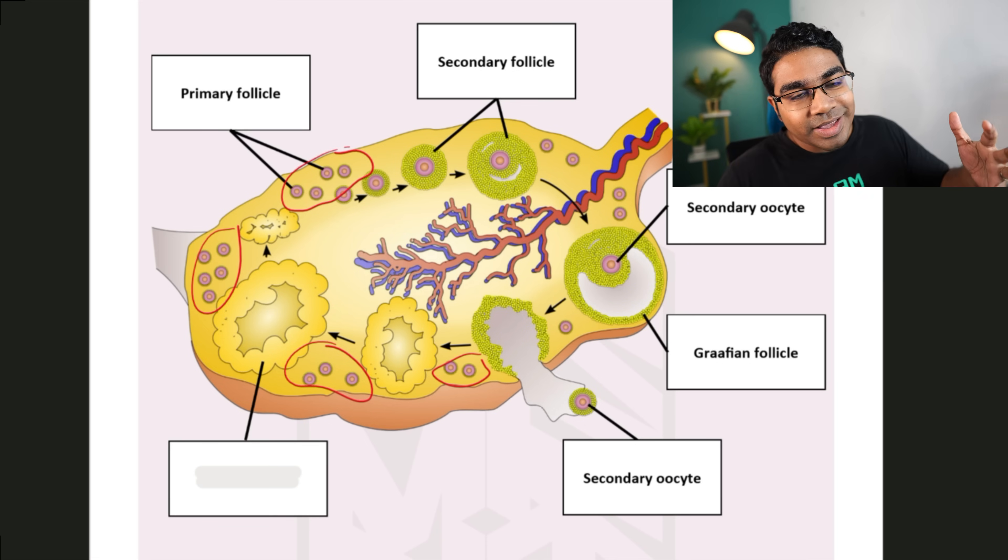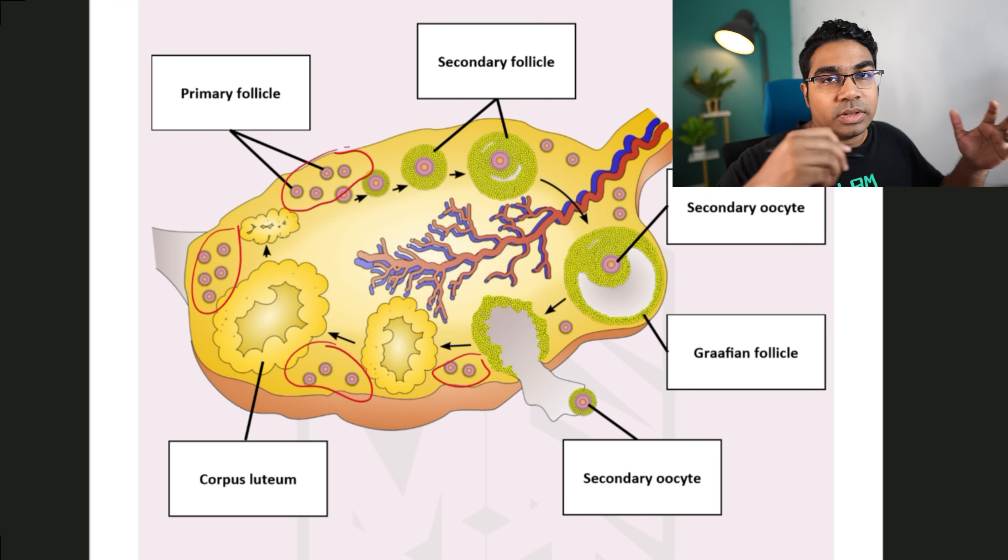This graafian follicle is then going to release the secondary oocyte during ovulation. The secondary oocyte is released. And once it is released, the secondary oocyte, if fertilized, will become the ovum. And finally, what's left of the graafian follicle? The follicle cells are going to become the corpus luteum.